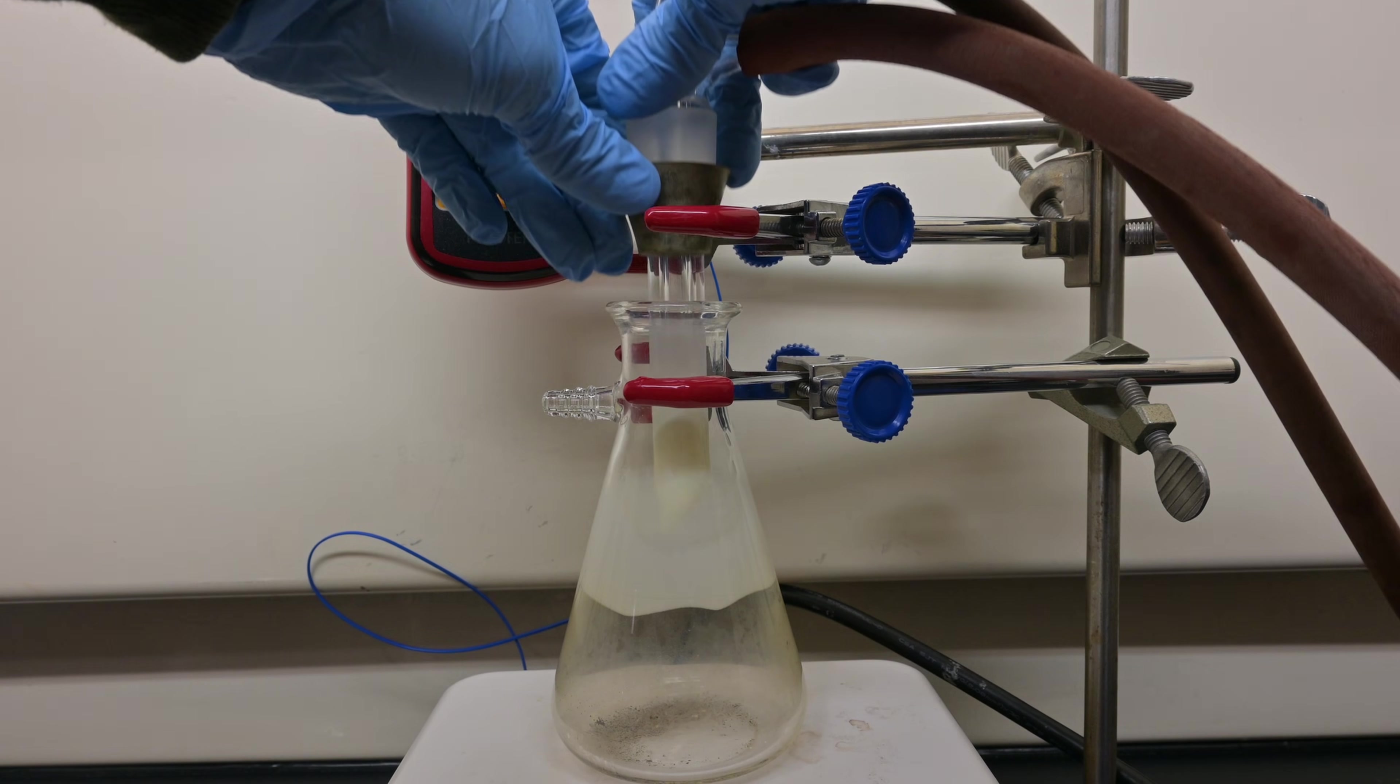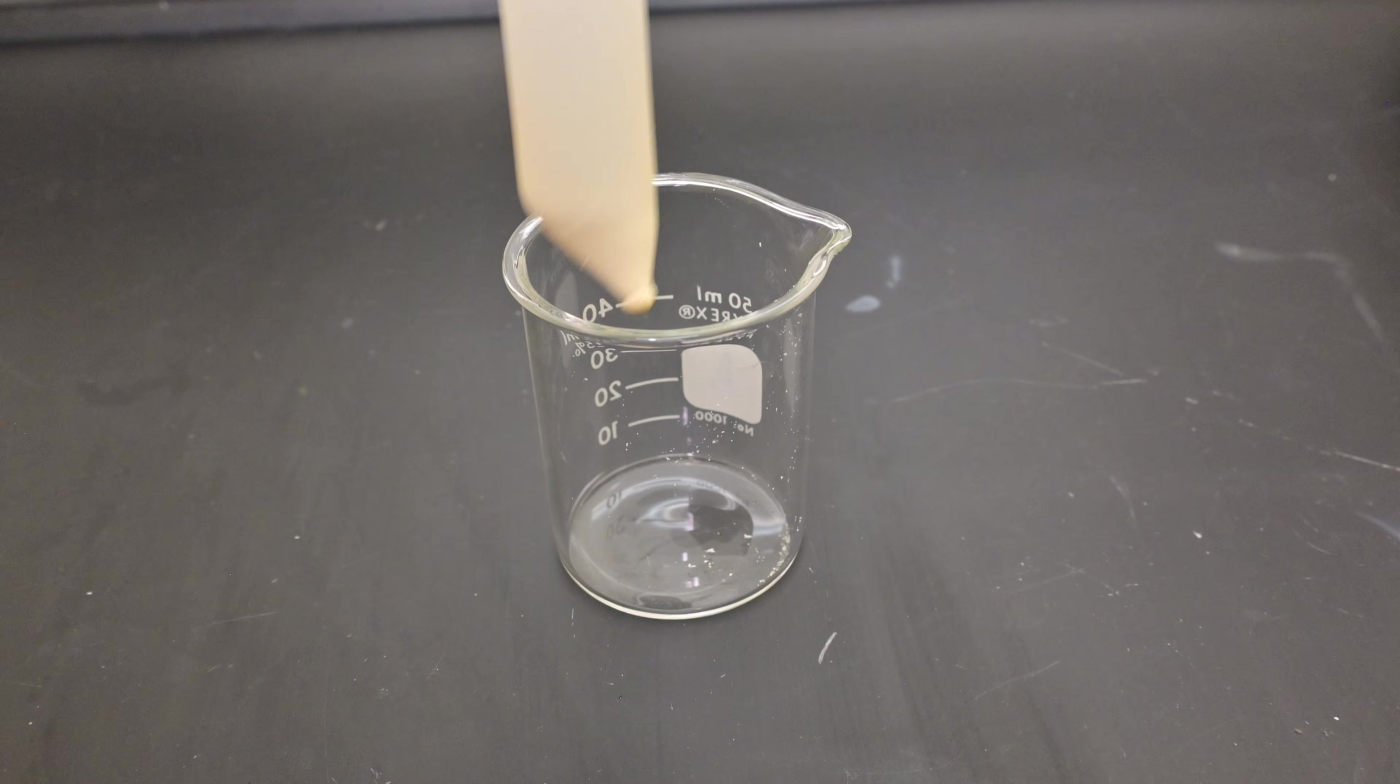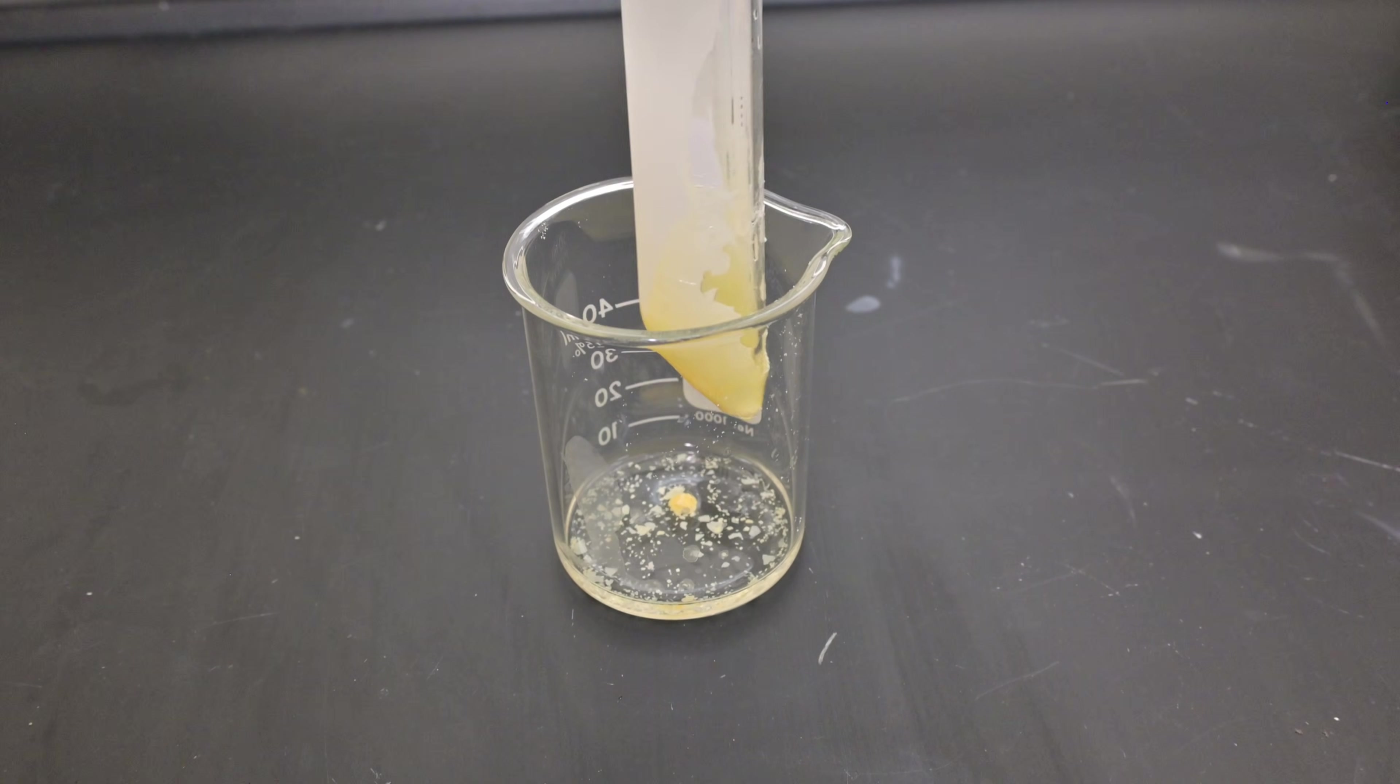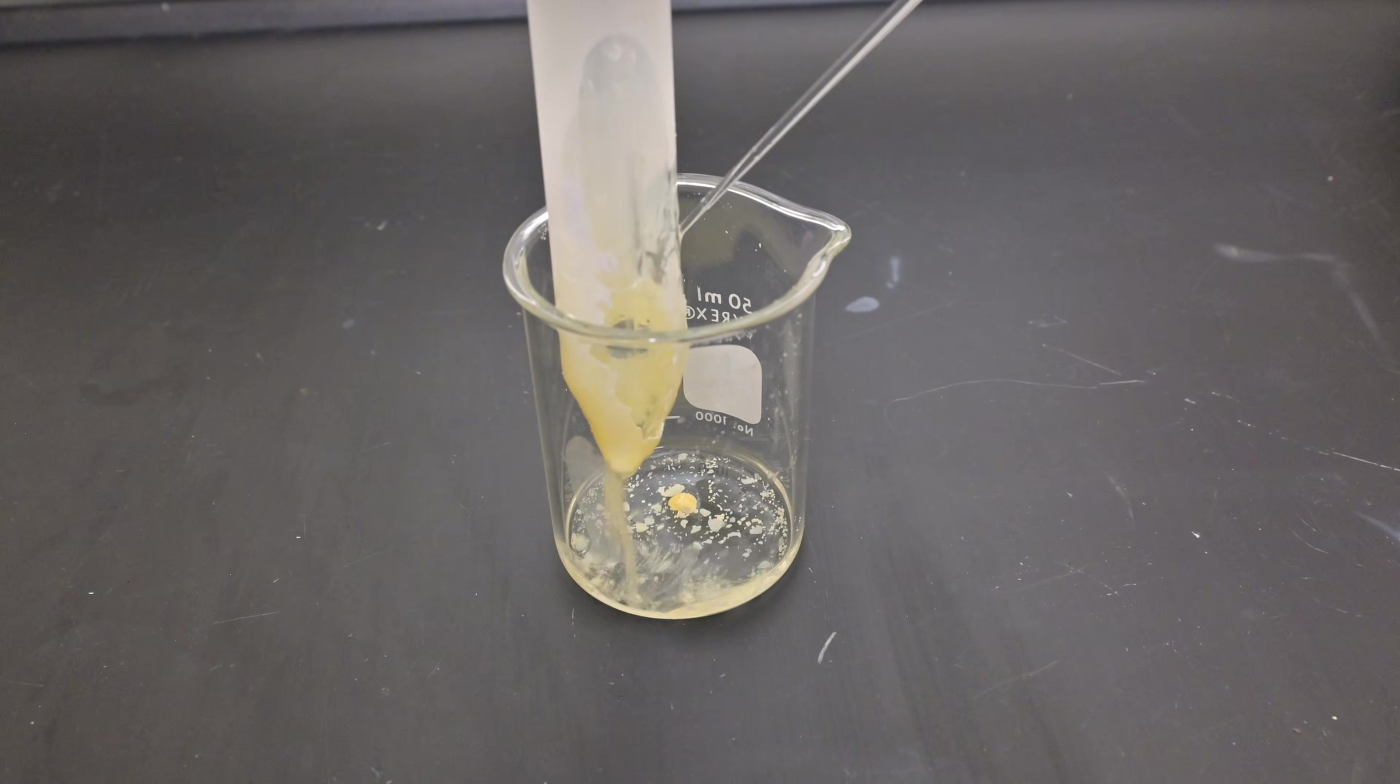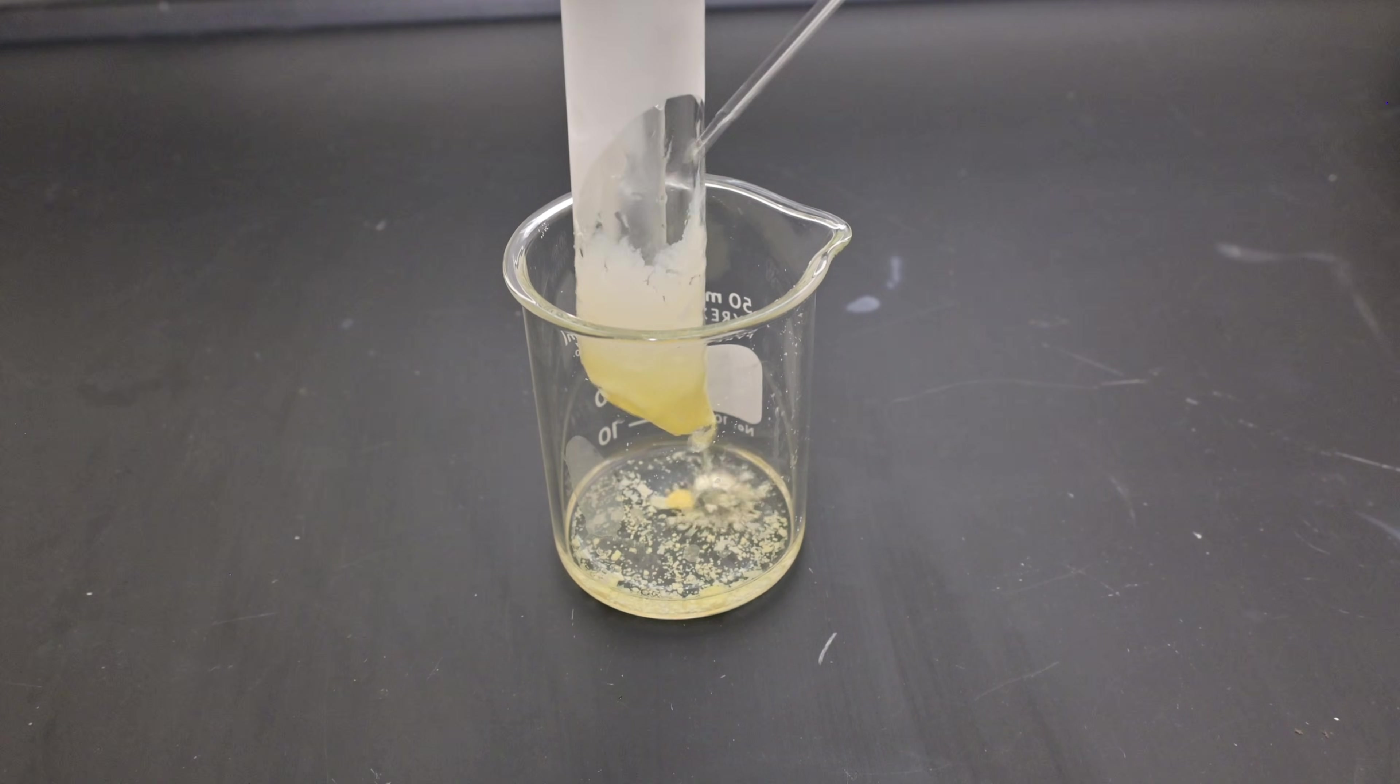I removed the cold finger from the vacuum flask and washed it off using dichloromethane into a beaker. The product in this case was mildly yellow, most likely since oils in the extraction process could evaporate off at low temperatures, just as the caffeine did. I then allowed the dichloromethane to evaporate off, leaving us with a yellow powder.